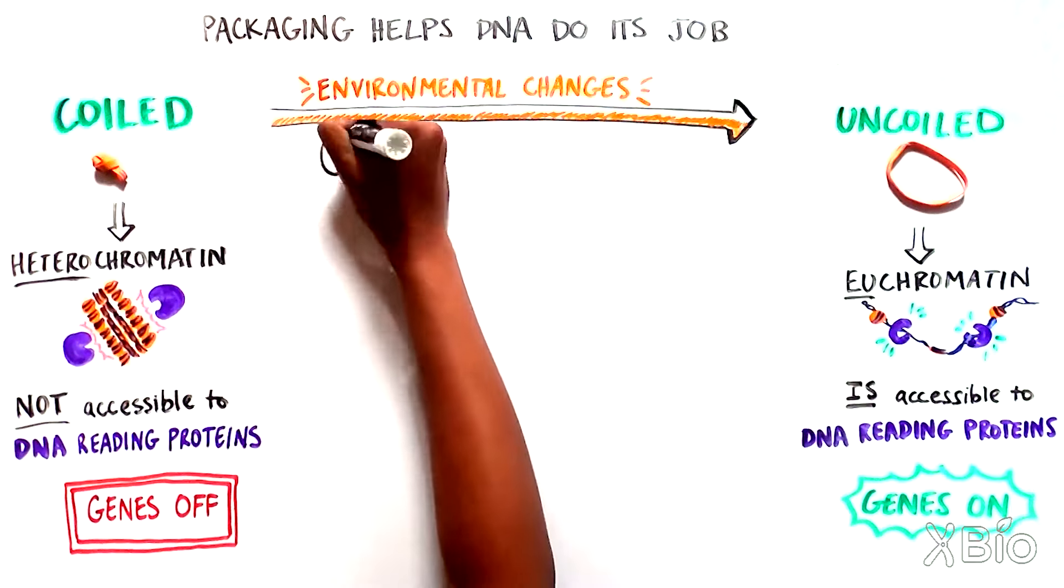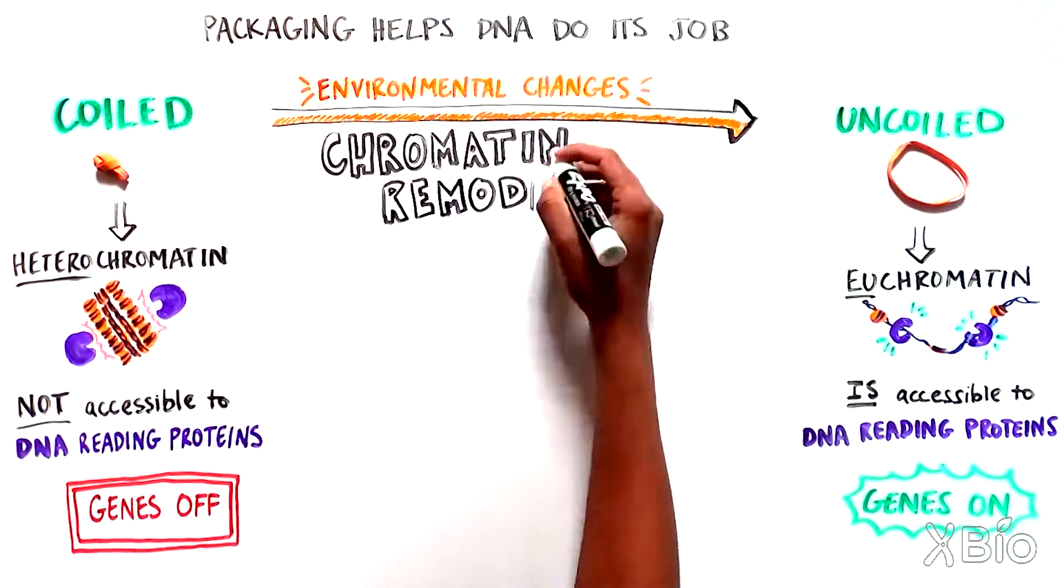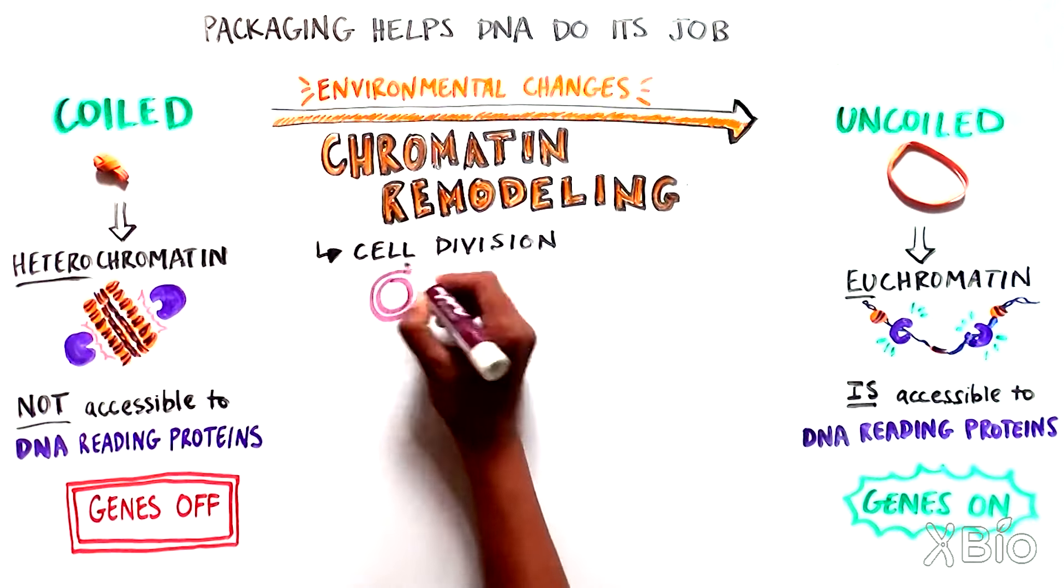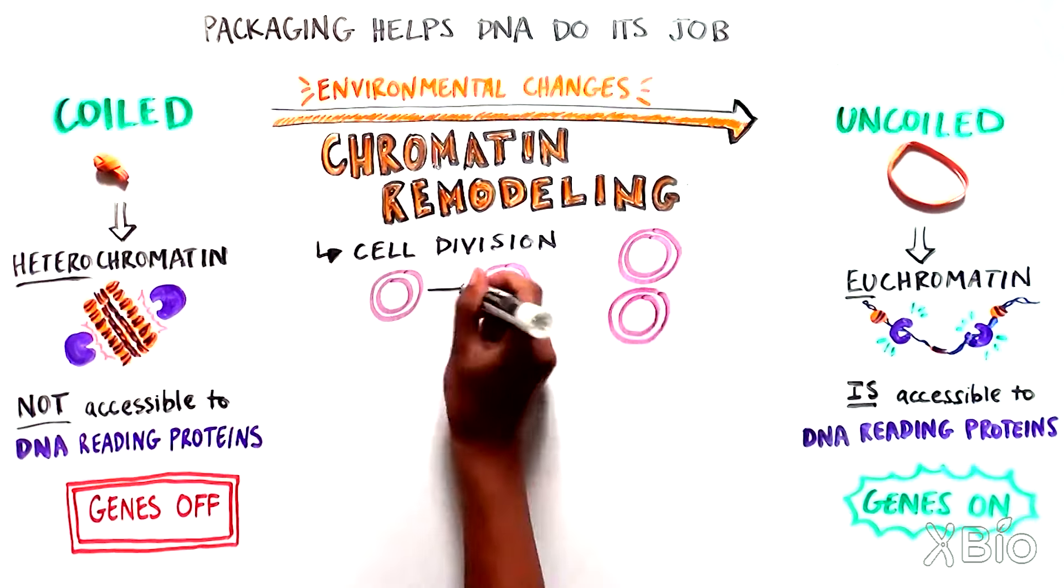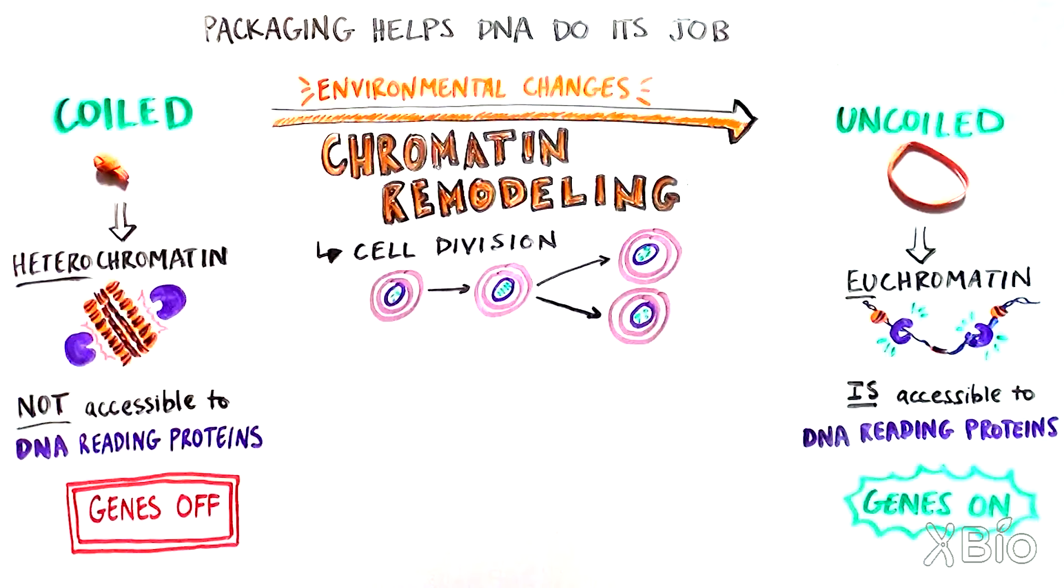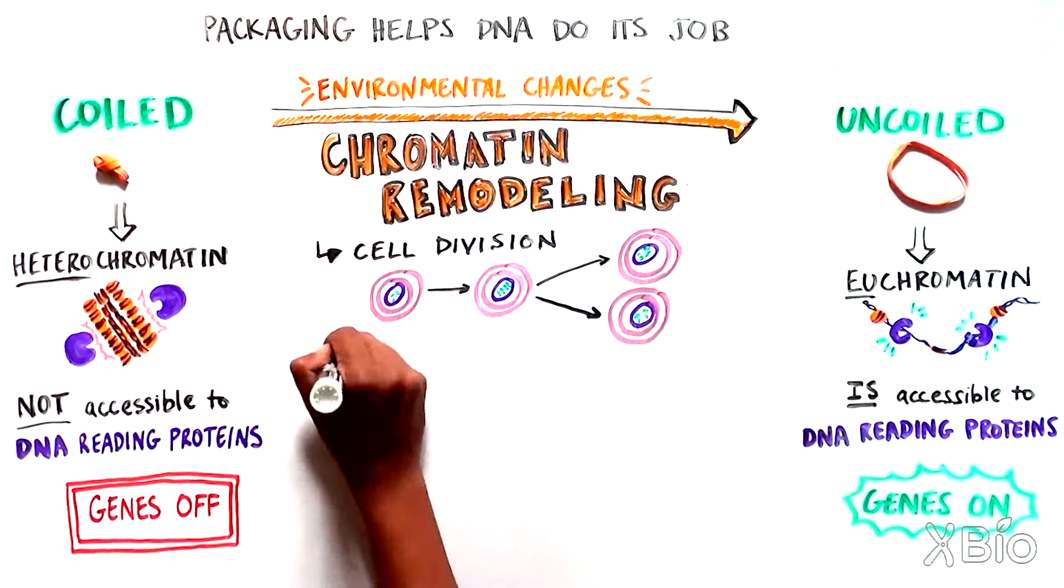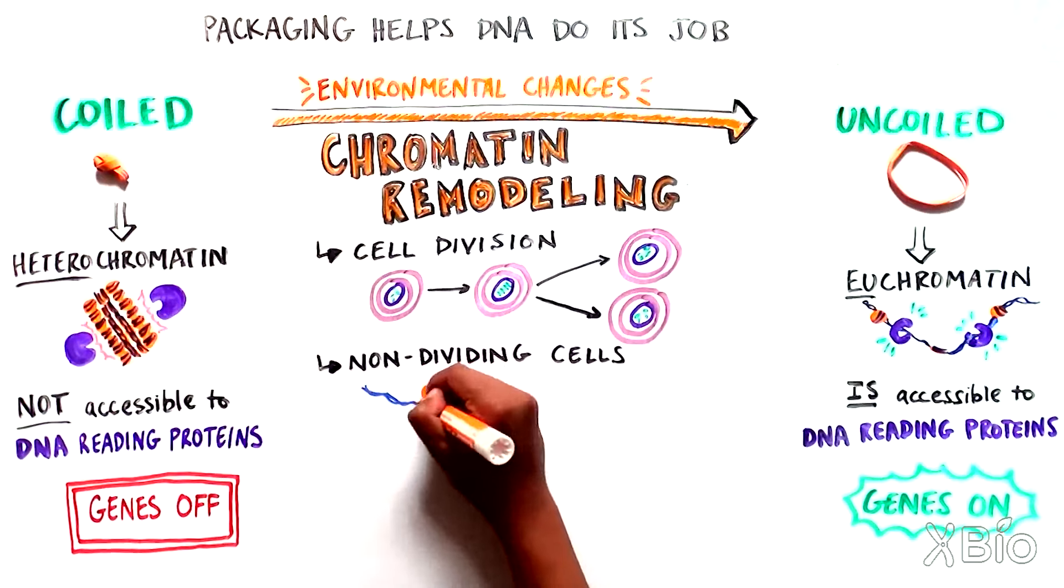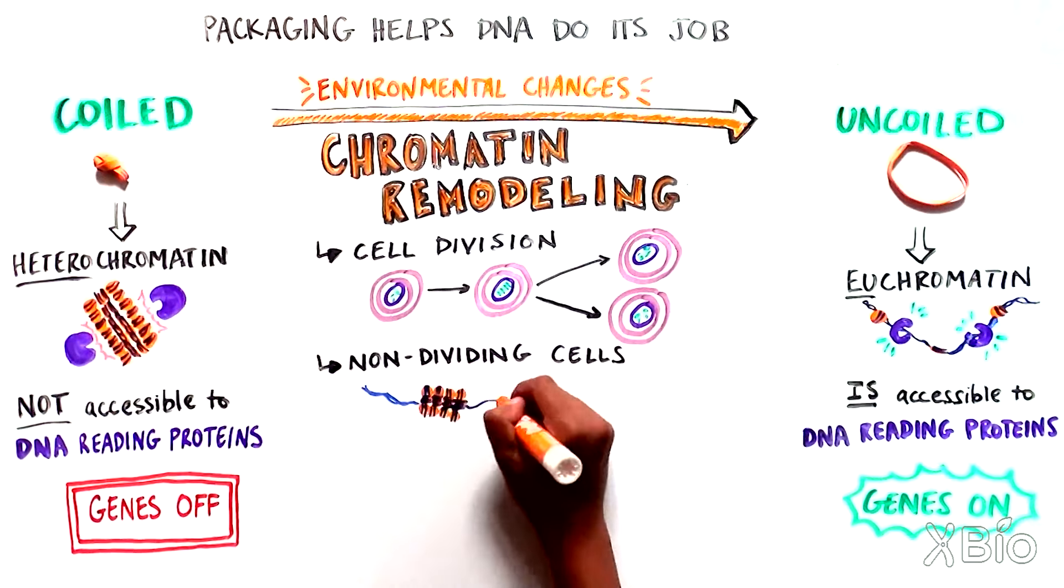These dynamic changes in chromatin density, a process called chromatin remodeling, are important for the process of cell division, when cells copy all of their genetic material and then segregate and repackage it into the newly formed daughter cell. In non-dividing cells, chromatin remodeling allows for tighter control over when and where certain genes are activated,